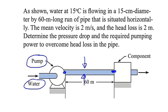Figure out the goals. Goal one is the pressure drop and that would be from section one to section two. Goal two is the power to overcome the head loss.